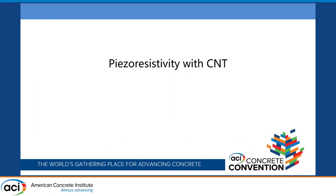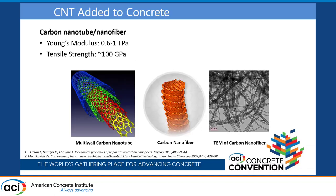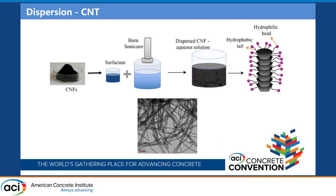Let me start with piezoresistivity using CNT. Many of you are familiar with carbon nanotubes — these are made from graphene and we are mostly talking about multi-wall carbon nanotubes. People have also used carbon nanofibers. They have very high modulus of elasticity, very high tensile strength, and very high electrical conductivity, which is why people have tried to use them for cement-based sensors. These materials are at the nanoscale, so they have a huge surface area.